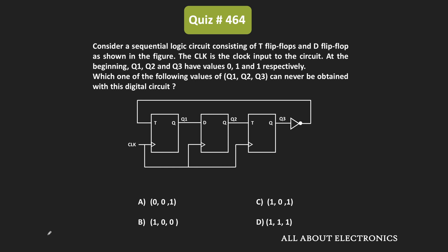So in this circuit, we have been given that at the beginning, the value of the outputs Q1, Q2, and Q3 is equal to 011. We have been asked that when the clock signal is applied to the circuit, then over the time, which one of the following values of Q1, Q2, and Q3 can never be obtained by the digital circuit. So let us find that.